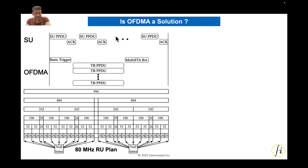If we use OFDMA, the AP starts by sending a basic trigger frame specifying a list of clients which can participate in a triggered uplink. All those clients respond with a trigger-based PPDU and send their uplink data using resource units or RUs. Since all the resource units are orthogonal, they don't interfere with each other, so all can be transmitted simultaneously. The AP then sends back a multi-station block ACK, aggregating the ACKs of all clients. This is clearly a much more efficient way of handling uplink traffic — we avoid random backoff overhead and PHY header overhead for every transmission.